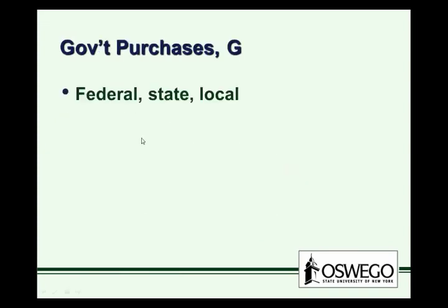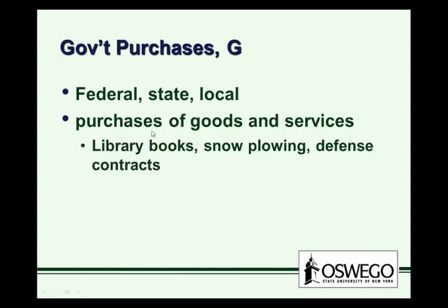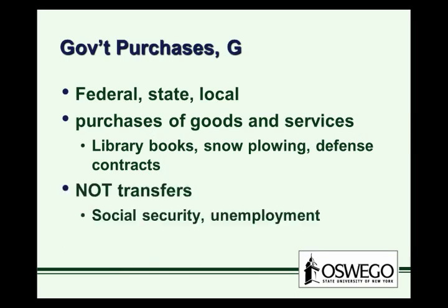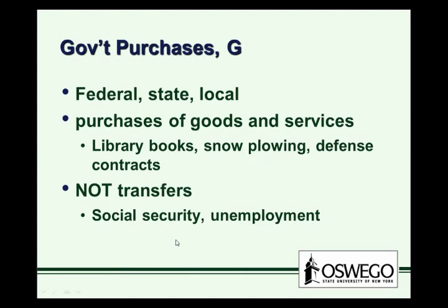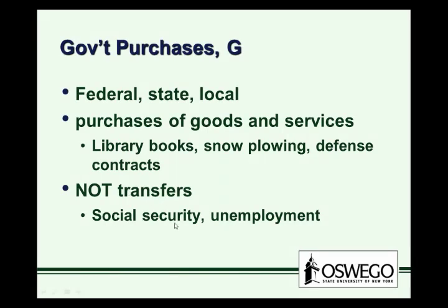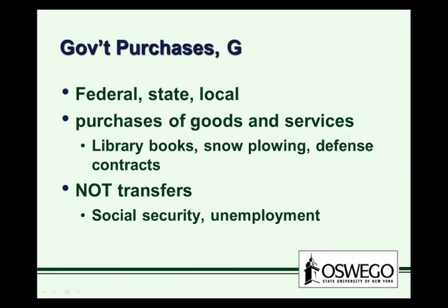Government purchases covers all levels of government — federal, state, and local — and refers to the purchase of goods and services: snow plowing, defense contracts, library books, for example. Government purchases in this category does not include transfers, because transfers are really about the income approach. Transfers such as Social Security and unemployment are not an expenditure on new goods and services — it's a transfer from payroll tax revenue to Social Security recipients, not something new that's being produced.